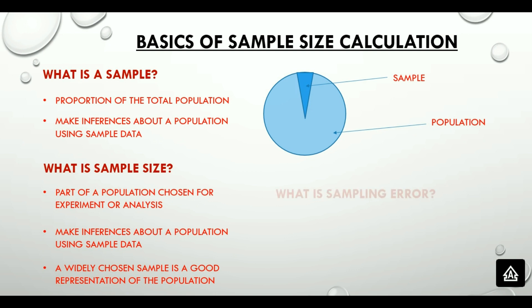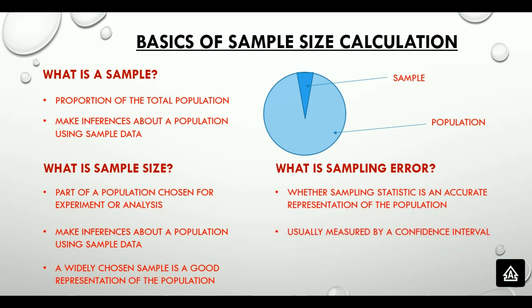The next very important thing that I want everyone to understand here is sampling error. Sampling error is the difference between a sample statistic used to estimate a population parameter and the actual but unknown value of the parameter. It is usually measured by confidence interval.